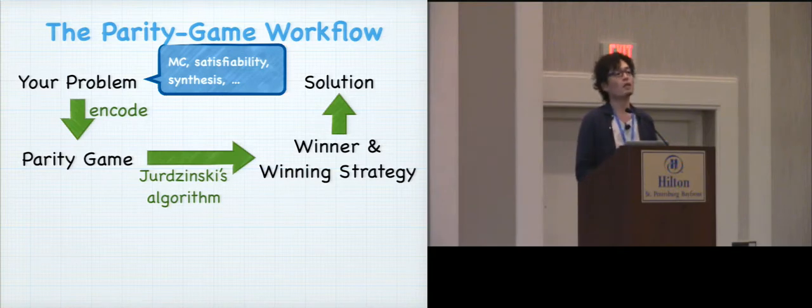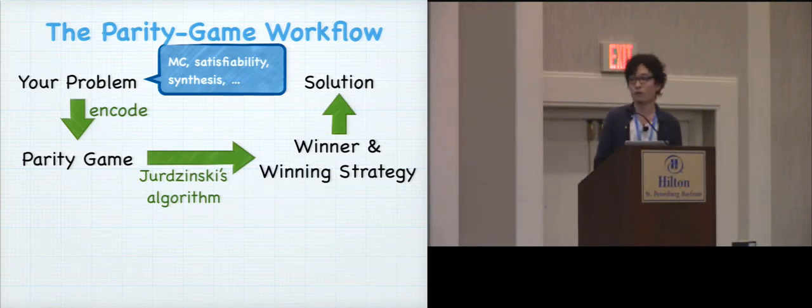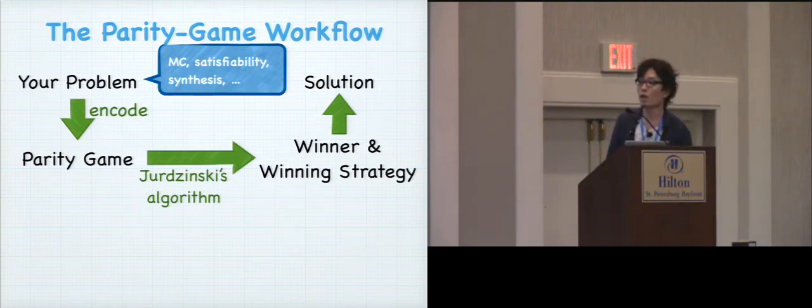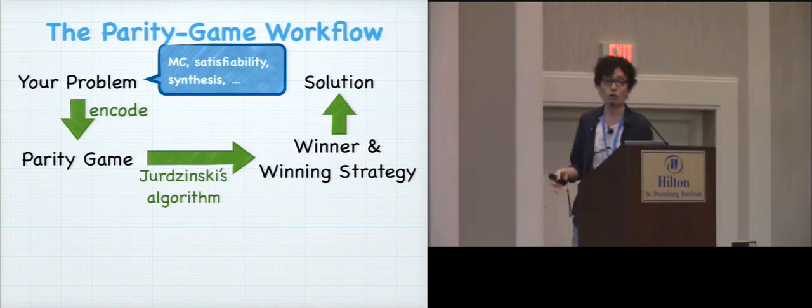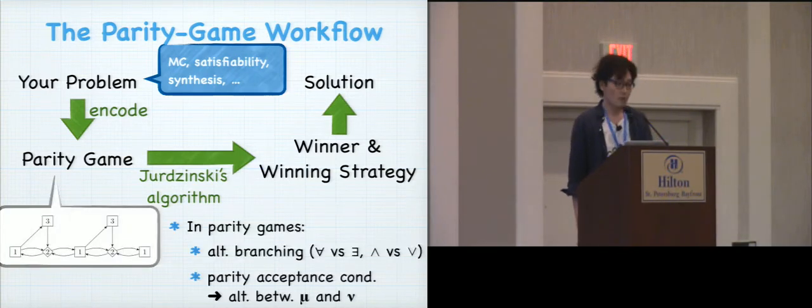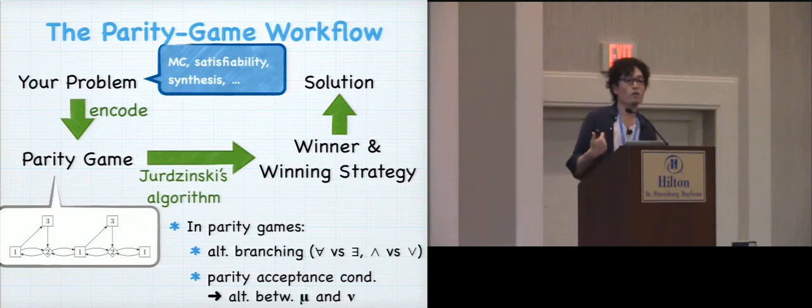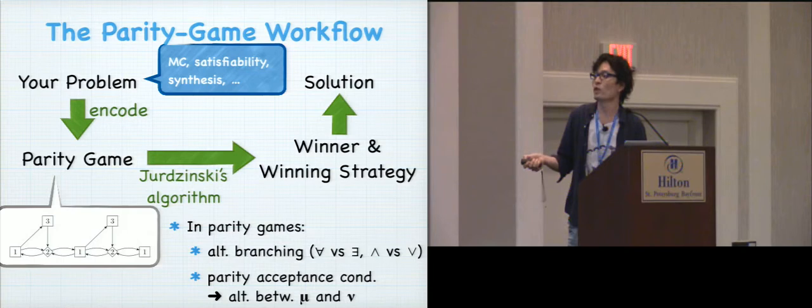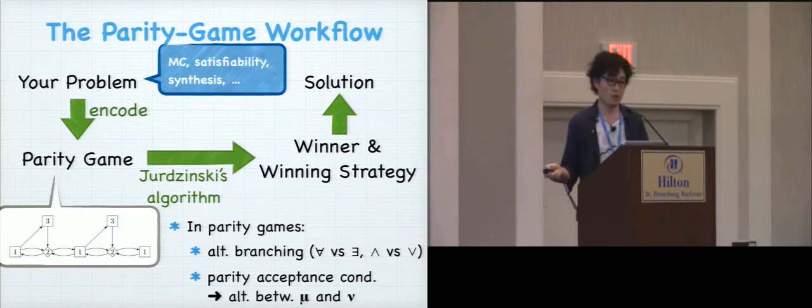Let me elaborate on this. In many verification techniques and algorithms, it's surprising that so many of them take this parity game workflow. So you have your problem, model checking, satisfiability synthesis, whatever. You encode your problem into a parity game. And then there's this seminar algorithm by Jurdzinski that efficiently solves it. And you get the winner and his or her winning strategy for this parity game, which you can translate back to the solution of your original problem. This parity game turns out to be a very powerful formalism for two reasons. One, because they are games. They have alternating branching. You can exploit that to encoding the alternation between conjunction, disjunction, universal and existential. That's one thing. And the other thing is the parity acceptance condition, which you can use for alternation between mu and nus.